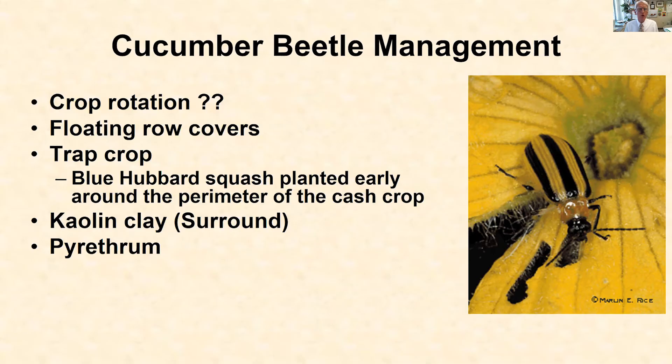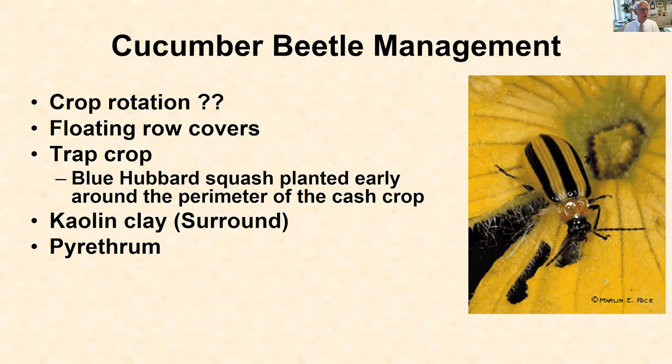We must realize that we cannot cure the bacterium after it is inside the plant, so we have to stop the beetles from feeding and transmitting the bacteria. Crop rotation gets mentioned, but these beetles are well adapted at finding their host plant, especially in small plots. It doesn't matter if you move the melons from one side of the garden to the other — the beetles will find them. But if you can put long distances between last year's crop and this year's, it might help.